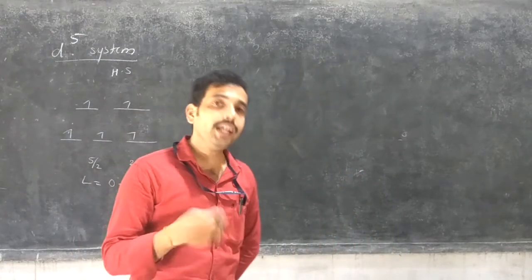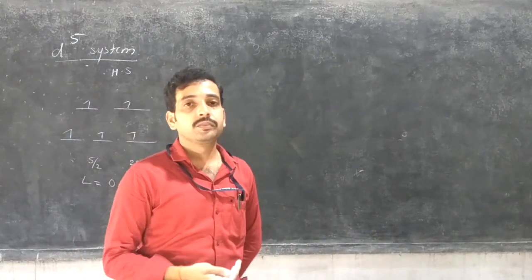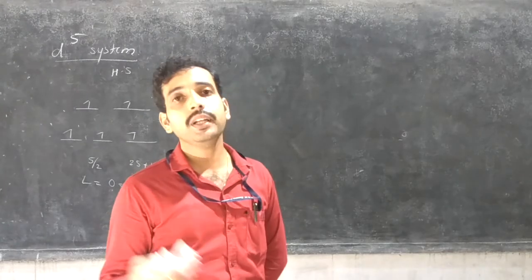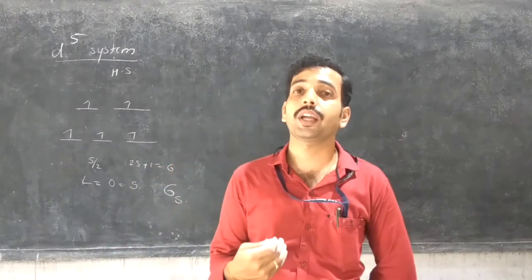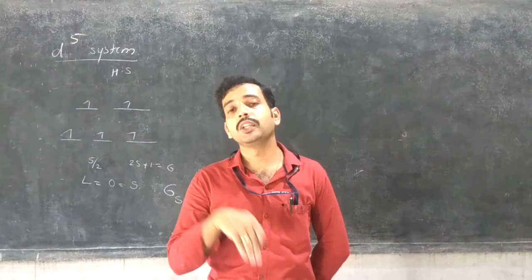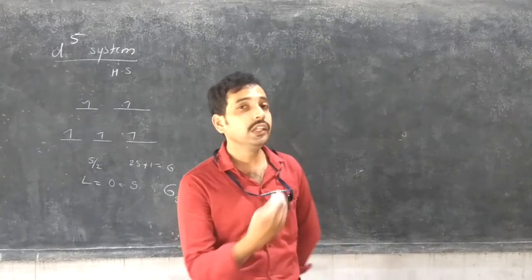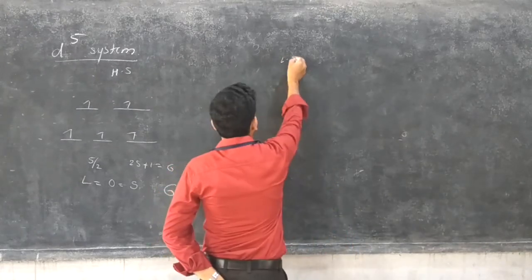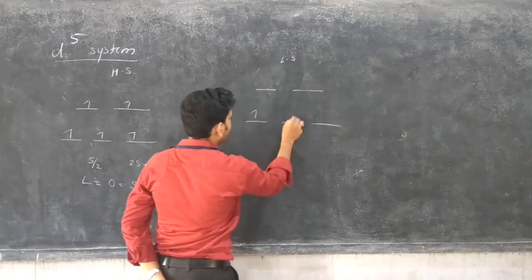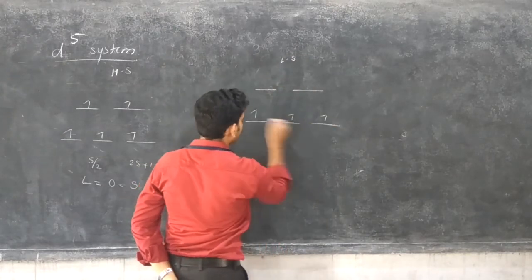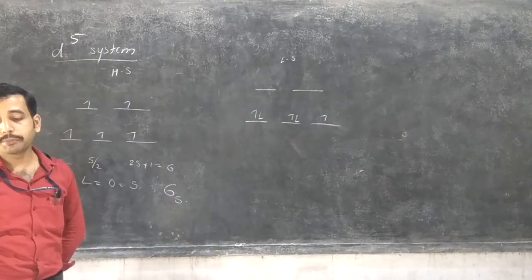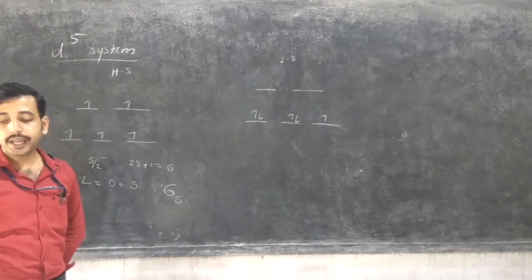That is why in the Orgel diagram, the D5 system cannot be explained. But in the Tanabe-Sugano diagram, it explains both high spin and low spin complexes. In low spin complexes, the electronic arrangement has 5 electrons, and S equals 1/2.